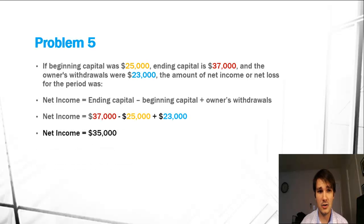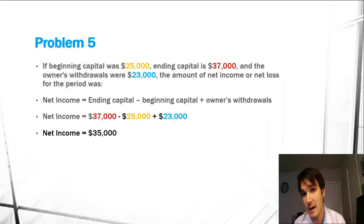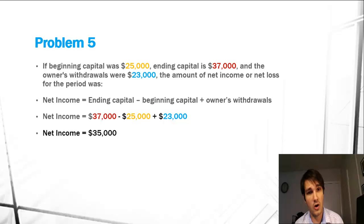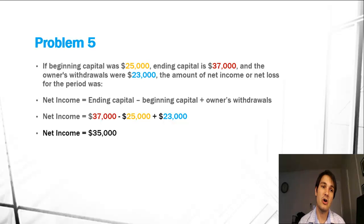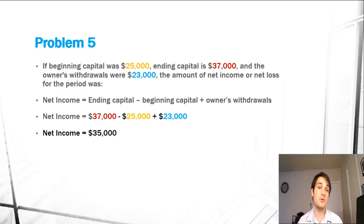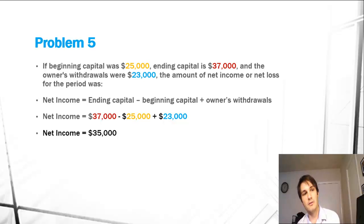So we can calculate net income by taking ending capital minus beginning capital plus owner's withdrawals. Our ending capital was $37,000, our beginning capital was $25,000, and our owner's withdrawals were $23,000. So if you take $37,000, subtract out $25,000, and add $23,000, we get a net income of $35,000, which was one of the answers.